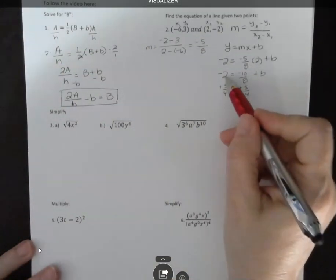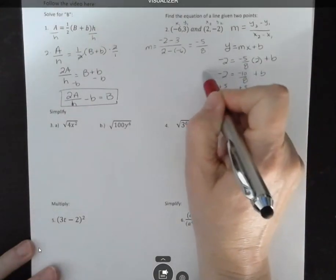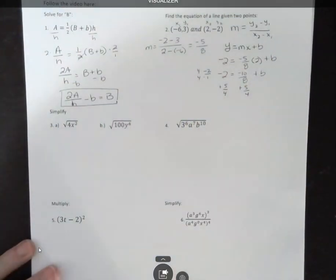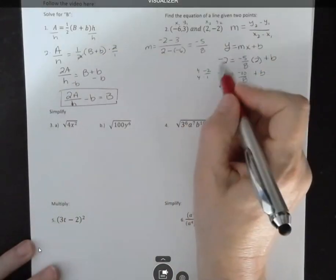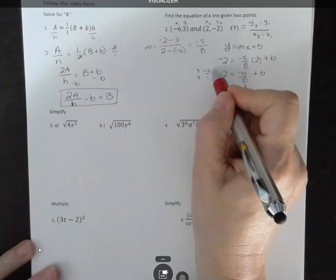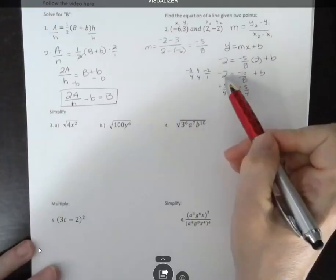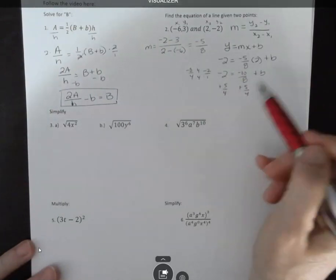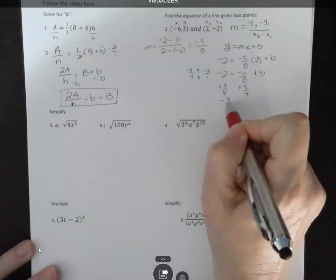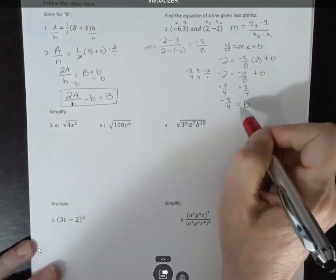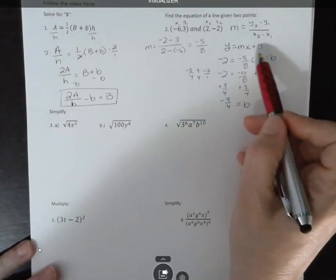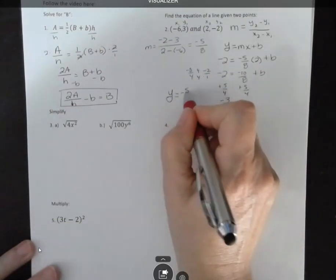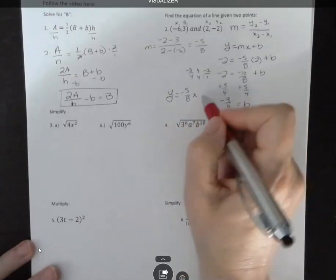Now I want to add negative 2 and positive 5 fourths. Negative 2, if you think about that as negative 2 over 1 and you want that to be a 4 on the bottom, then you would multiply the top and the bottom by 4. So that actually equals negative 8 over 4. Once you figure that out, then you say I have negative 8 fourths and positive 5 fourths, so that's negative 3 fourths, and that's what B equals. Now I want to put that back into this equation. I know the m and I know the B. So my final answer is going to be negative 5 eighths x minus 3 fourths.